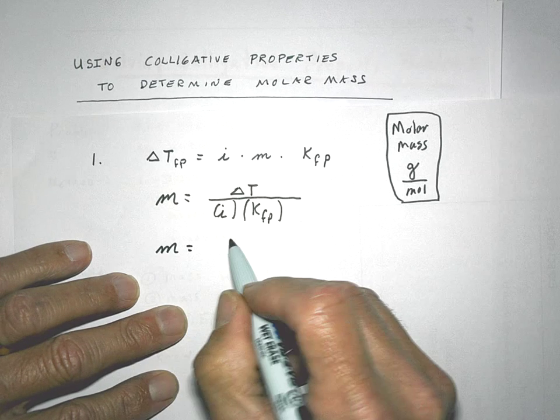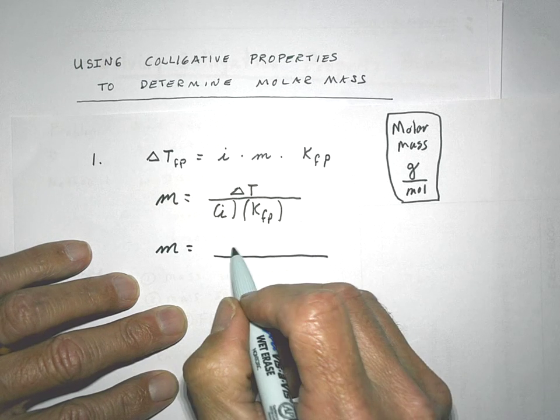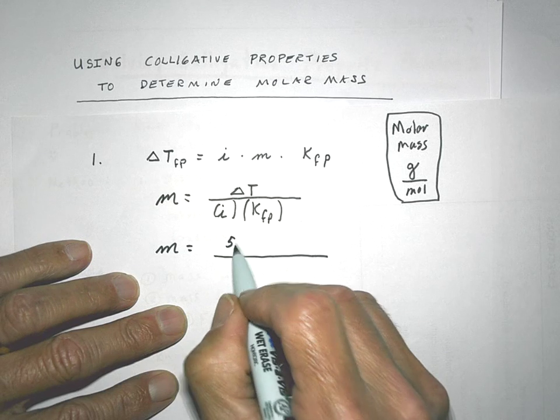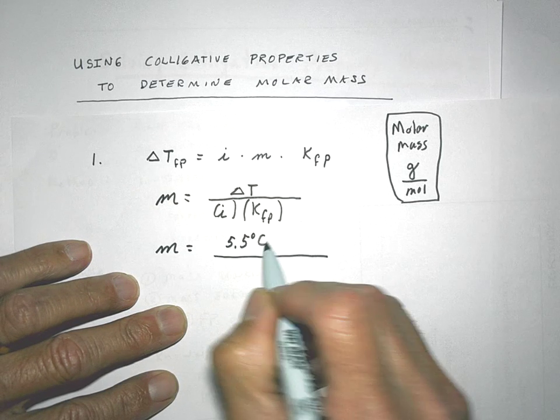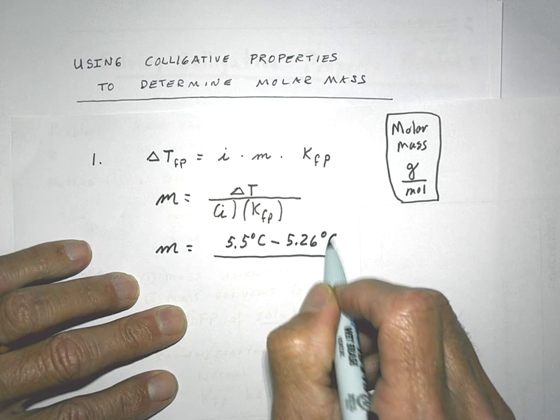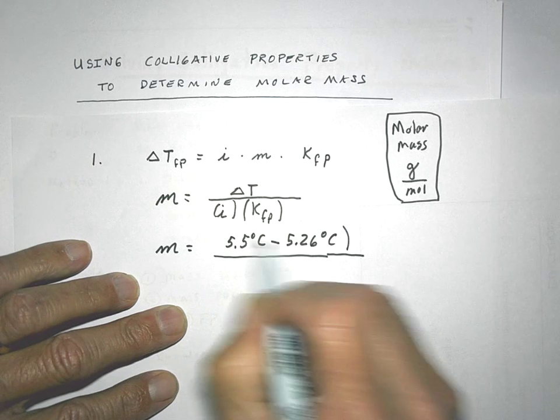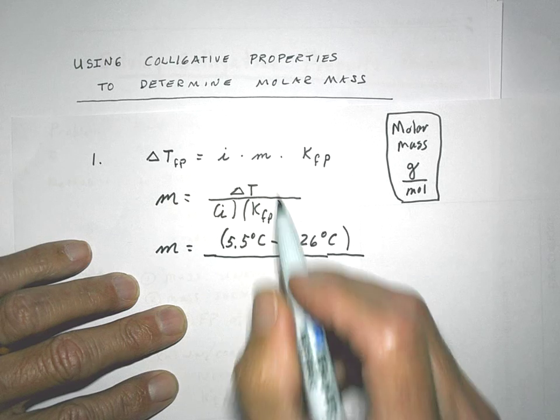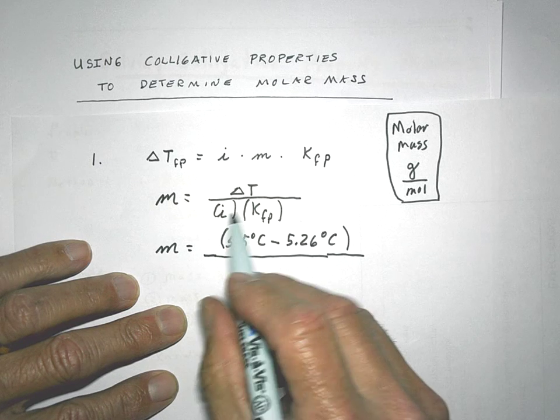So it would look like this. So molality is equal to the change in temperature of the freezing point. Now, remember, it normally freezes at 5.5 degrees, and in solution, in this situation, it froze below that. So if I subtract that, I can get the change in temperature of the freezing point.